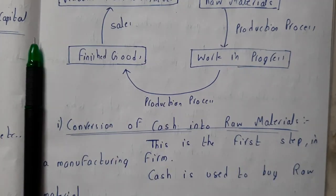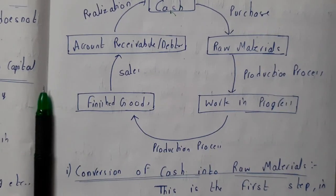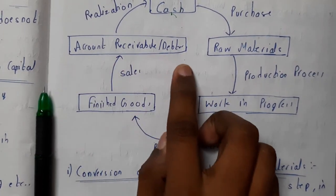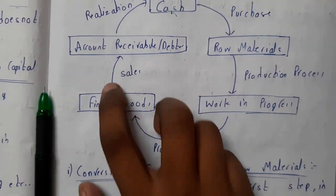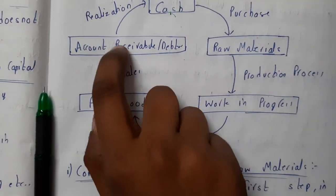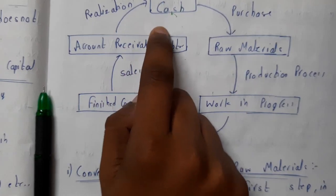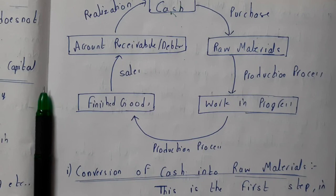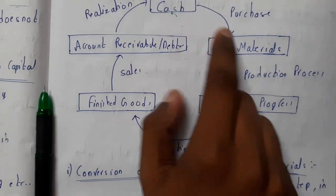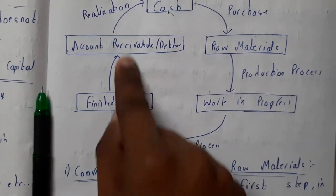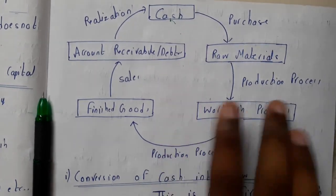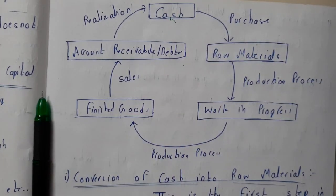Once finished goods are ready, you send them for sales — that is accounts receivable or debtors. At the end you get the realization, which is your profit or loss in terms of cash. You then invest some money back into raw materials and the process continues. If you get a huge profit, you can use that profit to increase your production rate.